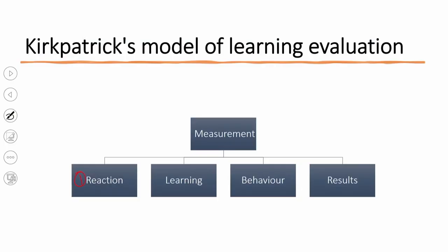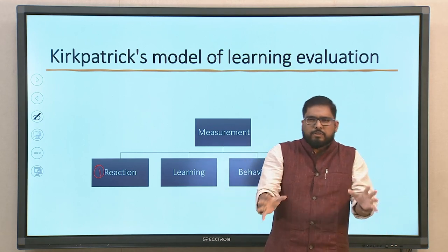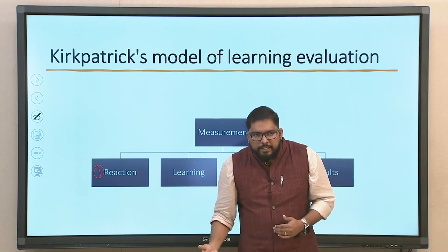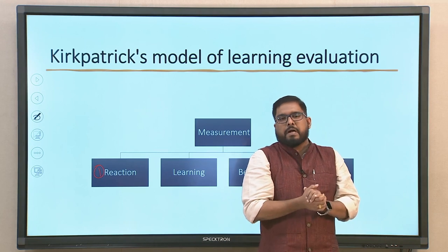There are certain vital elements when it comes to these measurements. The first is reaction — when we look into reaction, we generally look into surveys: how the people have actually reacted to the training program that has been conducted. We generally take a feedback survey using a Likert scale — on a scale of 1 to 5 or 1 to 7 — with options like strongly disagree, disagree, neutral, agree, strongly agree. Was the instructor able to communicate whatever he or she wanted to? How was the course content? These aspects pertain to the reaction part of the measurement.